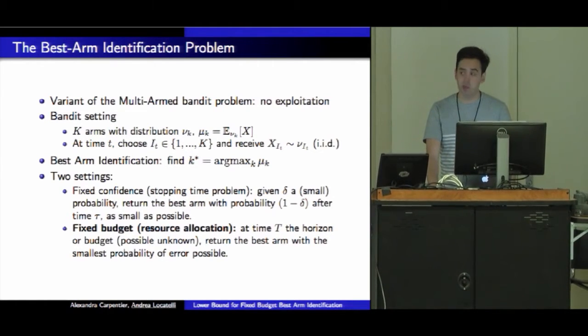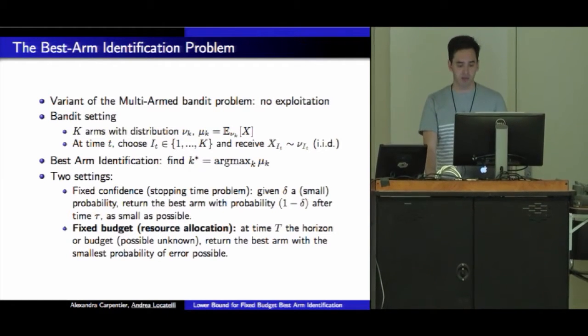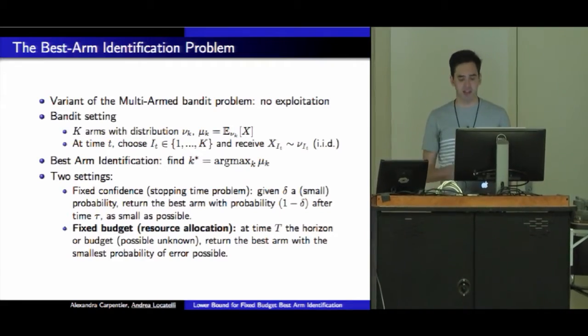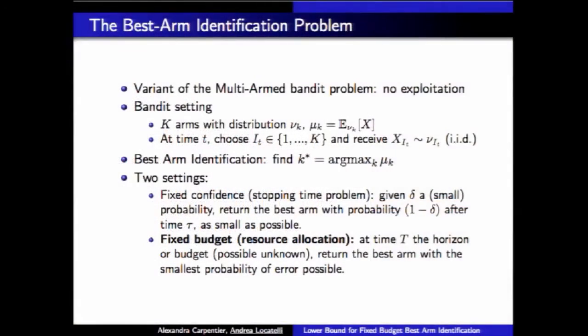We have a bandit setting with capital K arms with distributions characterized by a certain mean μ_k. At each time step t, my game is that I have to choose an arm and receive a sample from this arm ID.